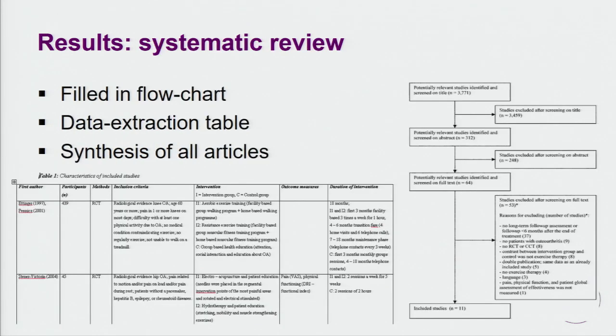The results section of a systematic review does not involve participants, but articles. So you will probably find a flowchart which leads to the articles included in the study. In the data extraction table, the main findings of these articles are presented. After the data extraction, there is a synthesis of all articles, which will eventually lead to the answer of the research question.